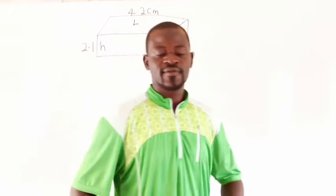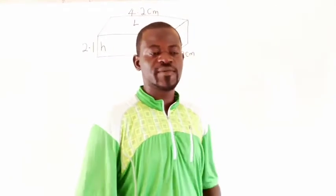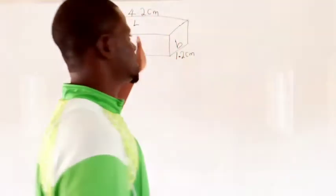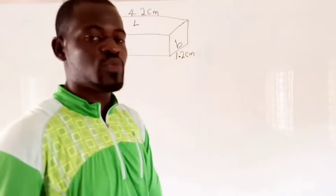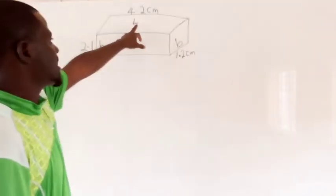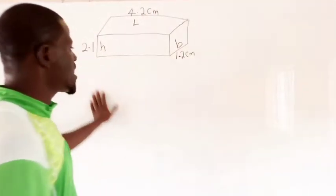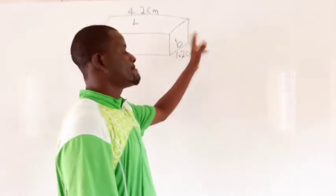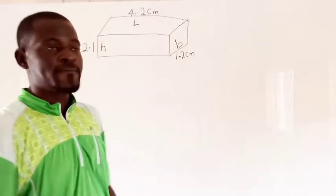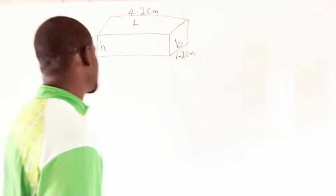I have a volume of three-dimensional shapes problem. Precisely, we have a cuboid on the board. From the diagram, our length is 4.2 cm, height is 2.1 cm, and breadth is 1.2 cm. From the formula, we have V